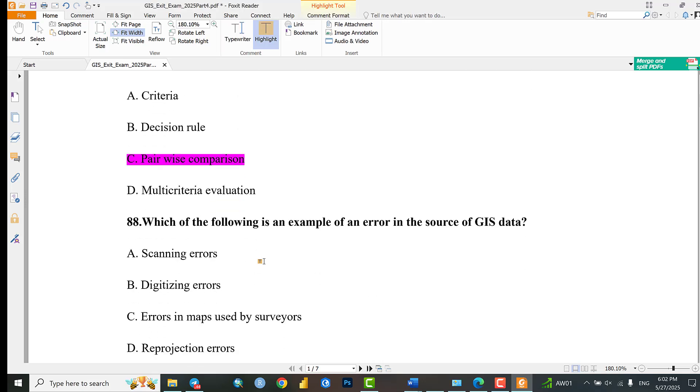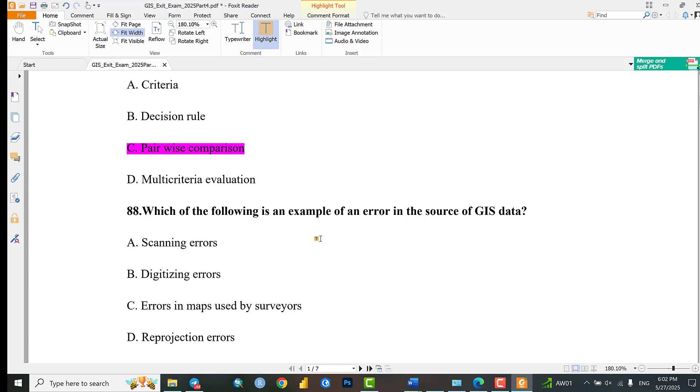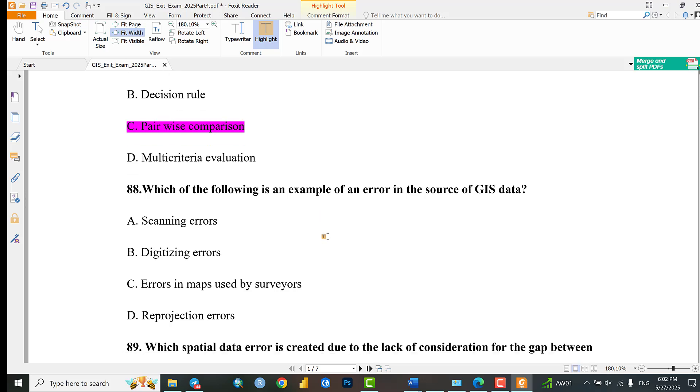Question 88: Which of the following is an example of an error in the source of GIS data? Options include scanning errors, digitizing errors, errors in maps used by surveyors, or reproduction errors, projection errors. Digitization errors are a source of errors in GIS data.